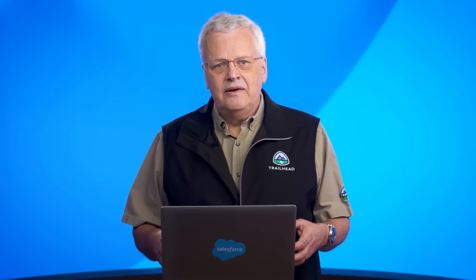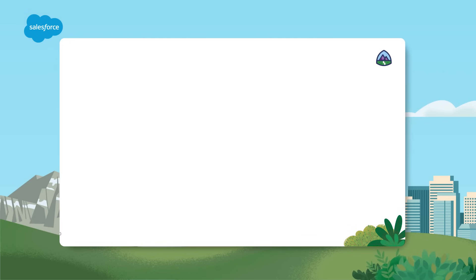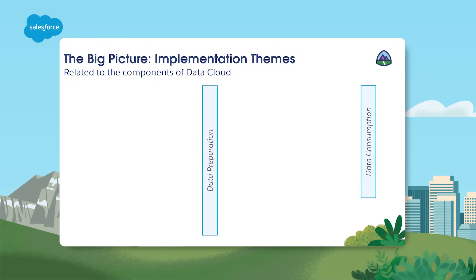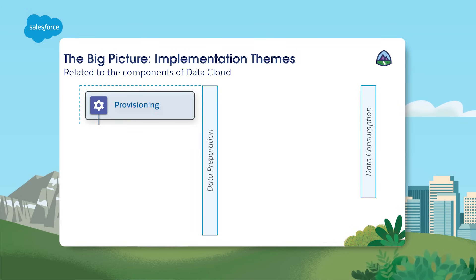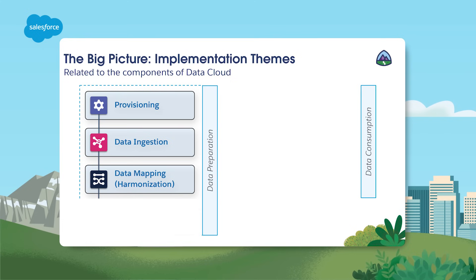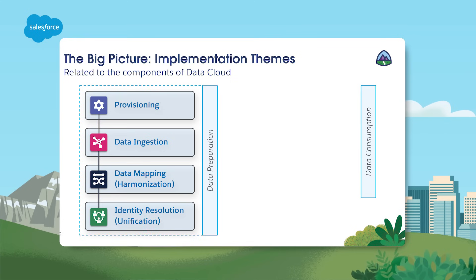Now that we've talked about the capabilities of Data Cloud and what it can enable you to do, let's look at what is required from an implementation standpoint. There's a lifecycle to your data and here are all the components that are part of it. This includes both data preparation and data consumption, which are broken down into several actions. Provisioning includes these actions: provision and set up Data Cloud instance, users and permissions, and configure integrations to source or target systems.